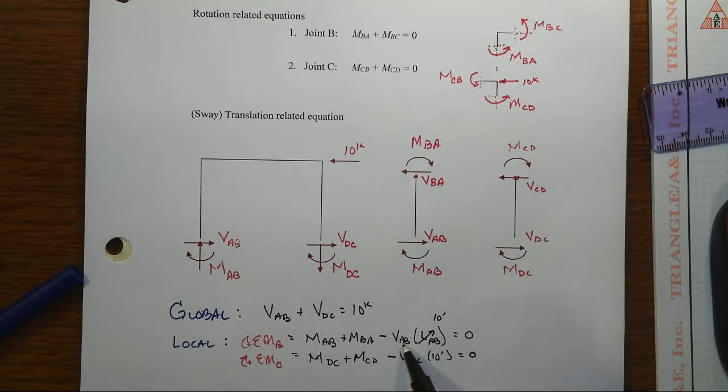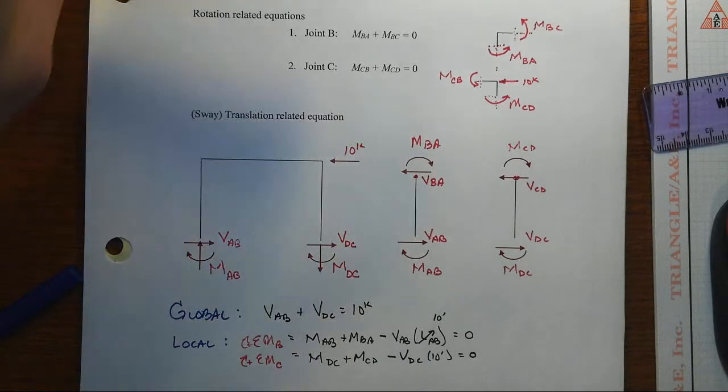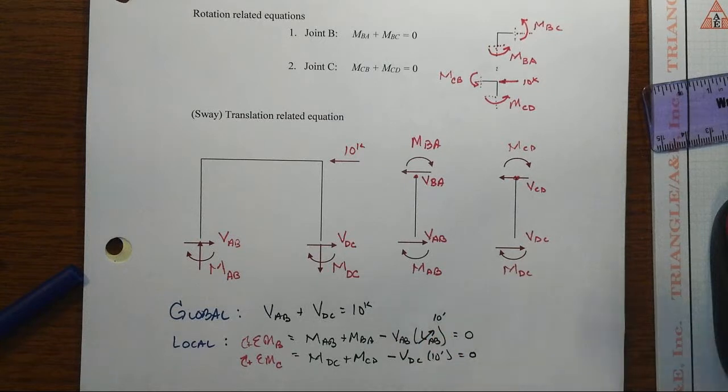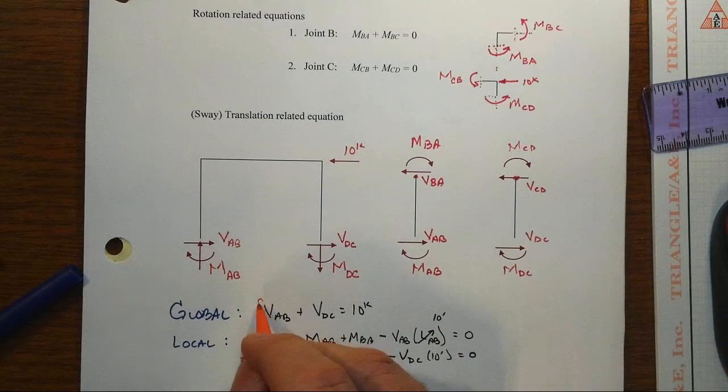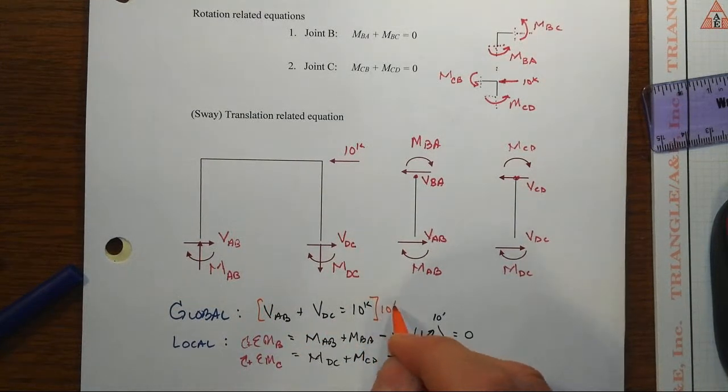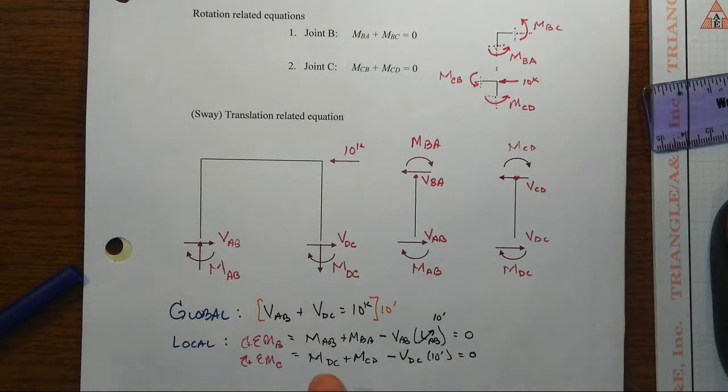And it's actually kind of more convenient when you realize that we have VAB times 10 and VDC times 10, the same thing, to multiply the whole thing by 10 foot. We do that, substitute it in, we're going to get now our final equation that we're going to need.